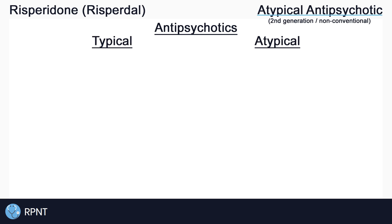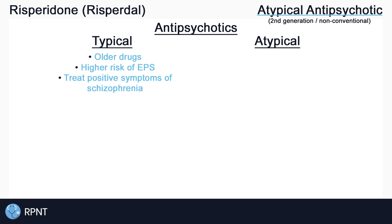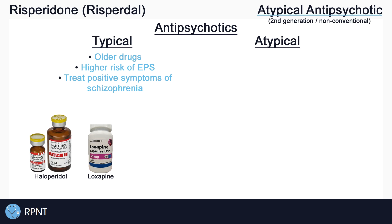Antipsychotics can either be typical or atypical. Typical antipsychotics, also known as first generation or conventional antipsychotics, are used in the treatment of psychosis and behavioral problems. They can be highly effective, but have a higher risk of causing side effects, especially extrapyramidal symptoms, or EPS, which we'll talk about more later on.